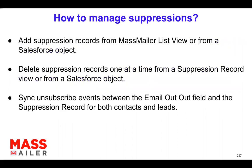Now let's take a look at how to manage these suppressions. You can add a single email record into the suppressions by going to that particular record's details page and adding it to your suppression list. That's one way. Or you can add it from a MassMailer list view, which is a custom object, and add a list of contacts or leads to the MassMailer suppression list.